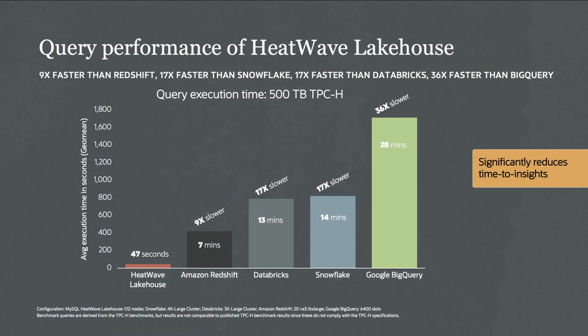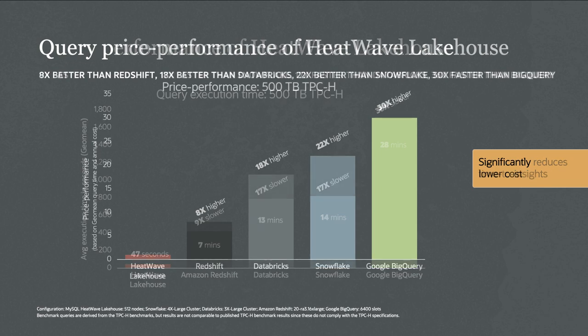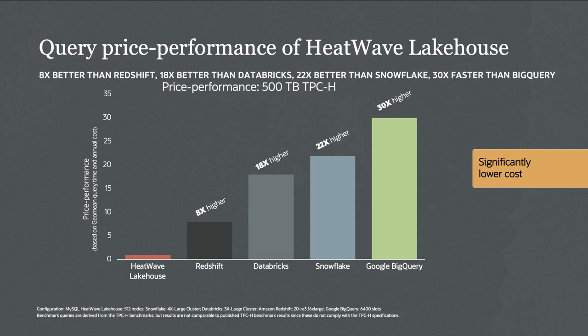MySQL HeatWave Lakehouse is incredibly fast. In a 500 terabyte TPC-H benchmark using Lakehouse, we are 9 times faster than Redshift, 17 times faster than Databricks, 17 times faster than Snowflake, and 36 times faster than Google BigQuery. On price performance: 8 times cheaper than Redshift, 16 times less expensive than Databricks, 22 times less expensive than Snowflake, and 30 times less expensive than Google BigQuery.